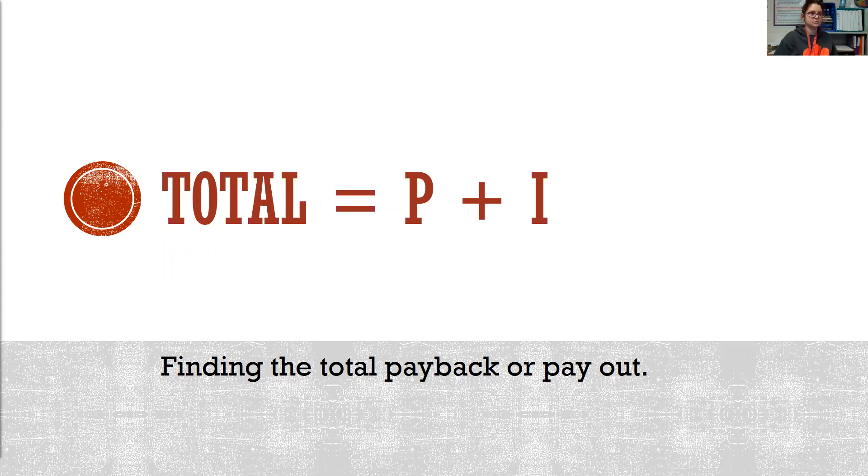The other thing we might have to look for is the total you have to pay back or the total that is paid out to you when you're done investing your money. And we find the total by adding our principal and our interest P plus I.